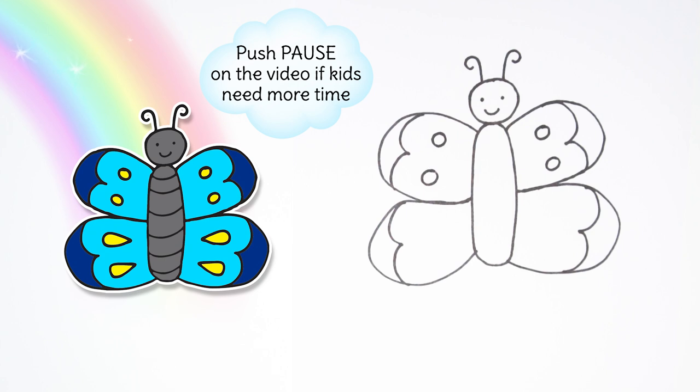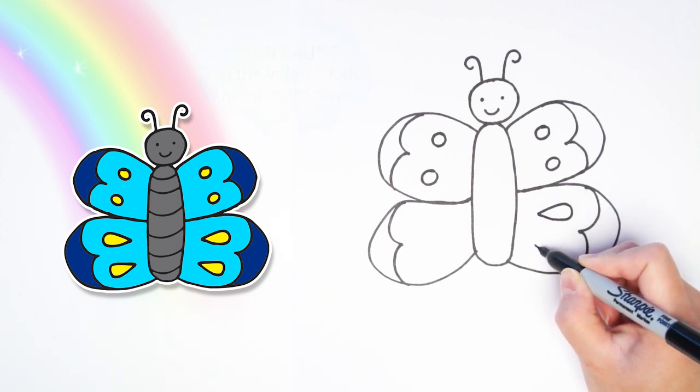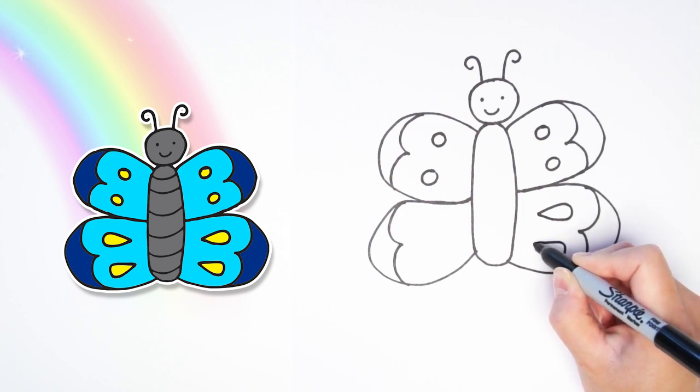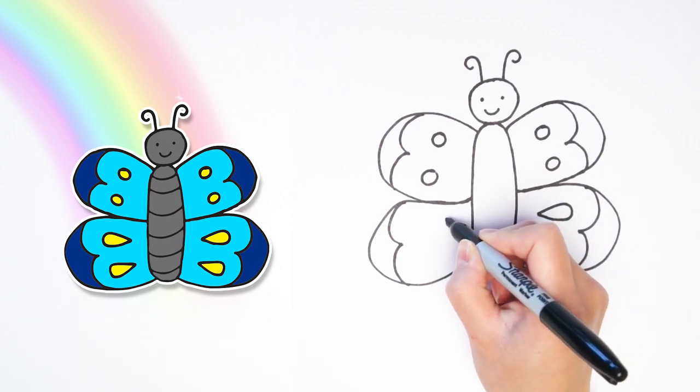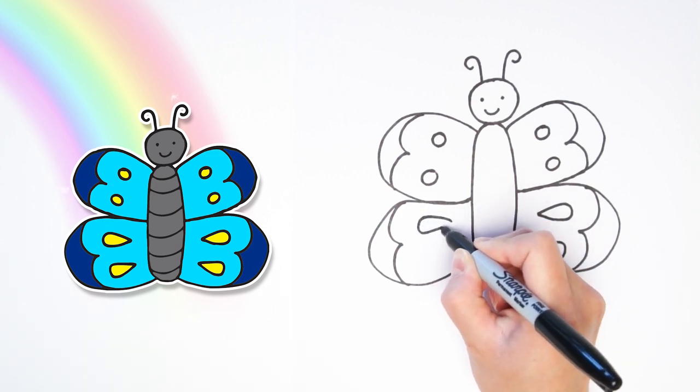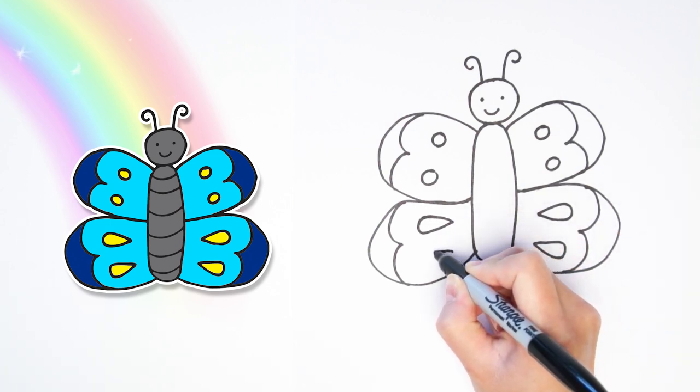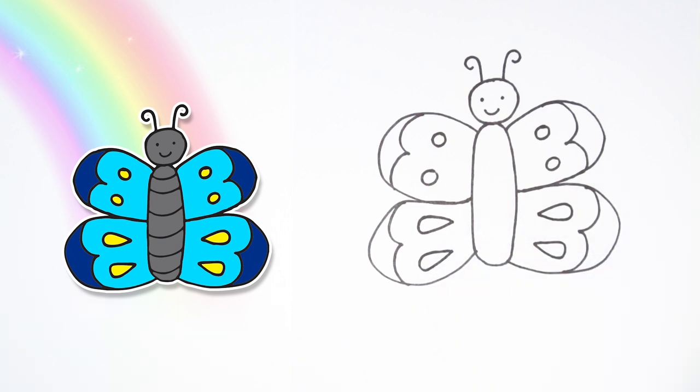But let's do something different on the bottom wings. Let's do these sideways teardrop shapes. Just like that. Let's do two of them on each wing. And then on the other side, some teardrops facing the other way. And then another teardrop right below it. Just so it looks a little different than the top wings. Don't those wings look cute?